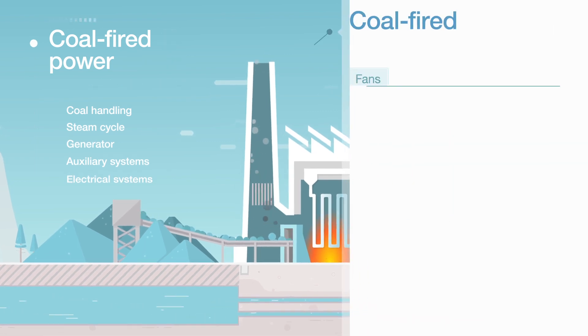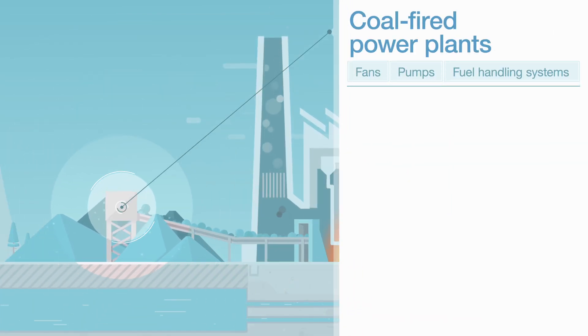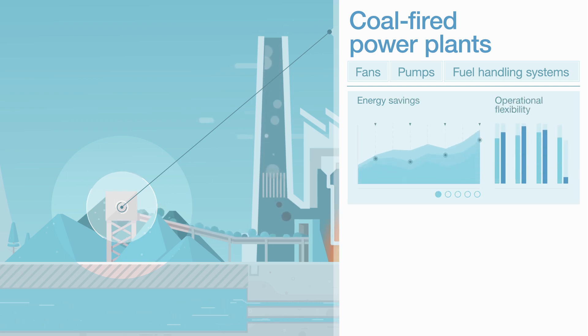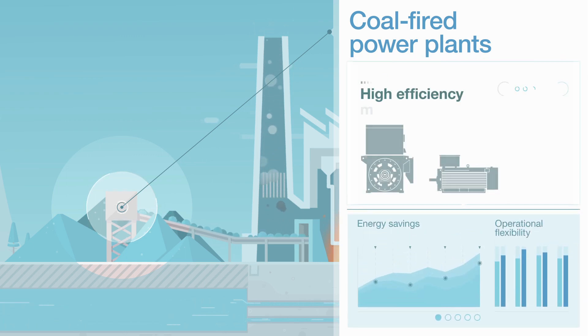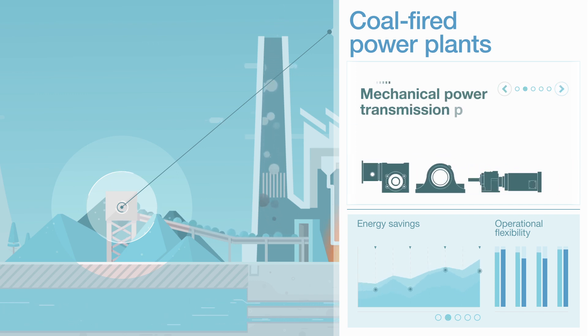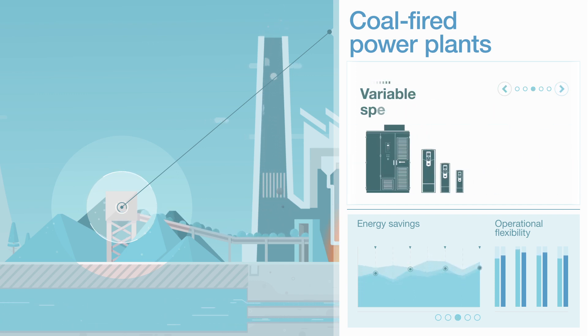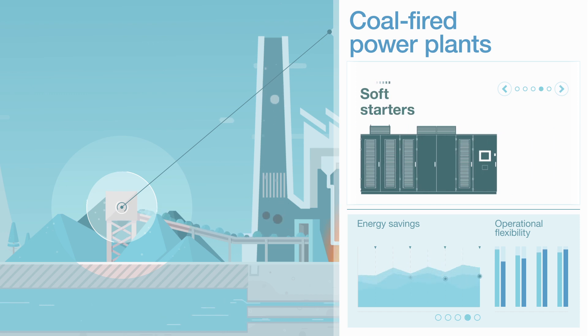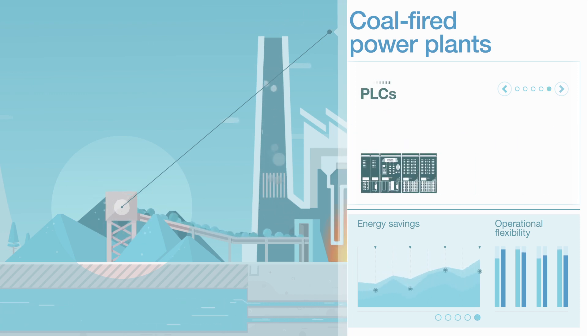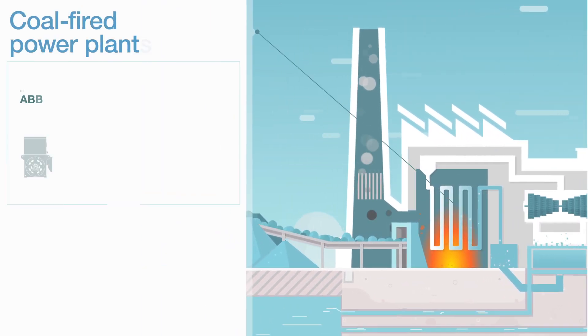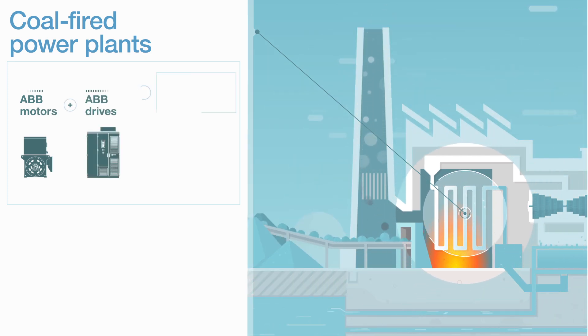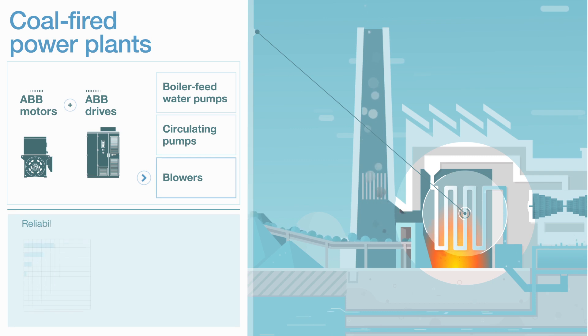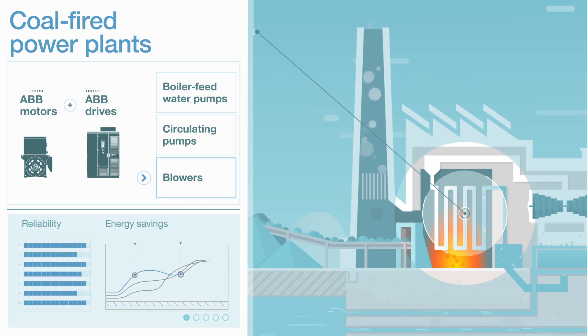For fans, pumps and fuel handling systems, such as conveyors, energy savings and operational flexibility are enhanced with ABB's high-efficiency motors, mechanical power transmission products, variable speed drives, soft starters and PLCs. Using ABB motors and drives on boiler-feed water pumps, circulating pumps and blowers improves reliability and achieves significant energy savings.